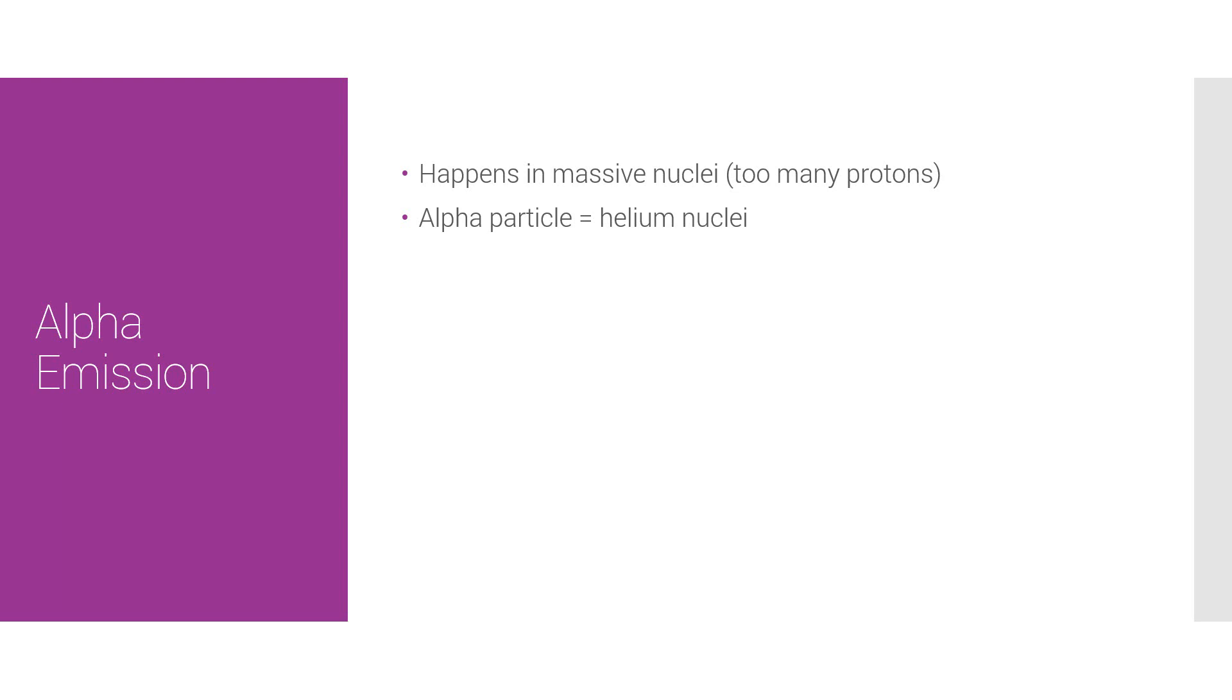And when an alpha particle is emitted, the proton number decreases by 2, and the nucleon number decreases by 4.